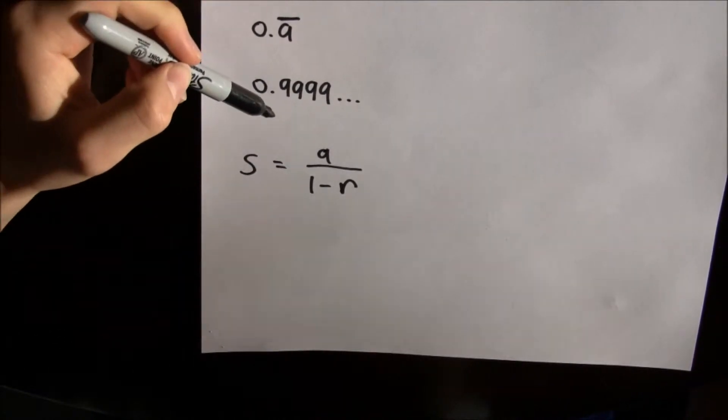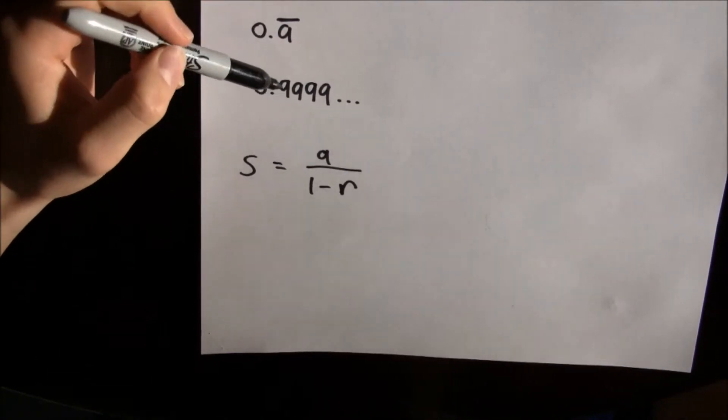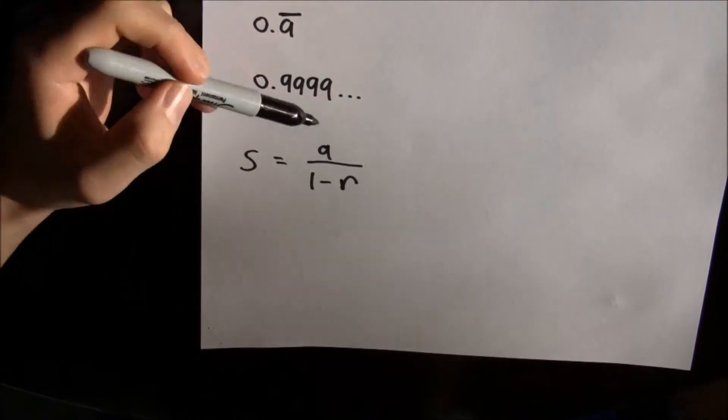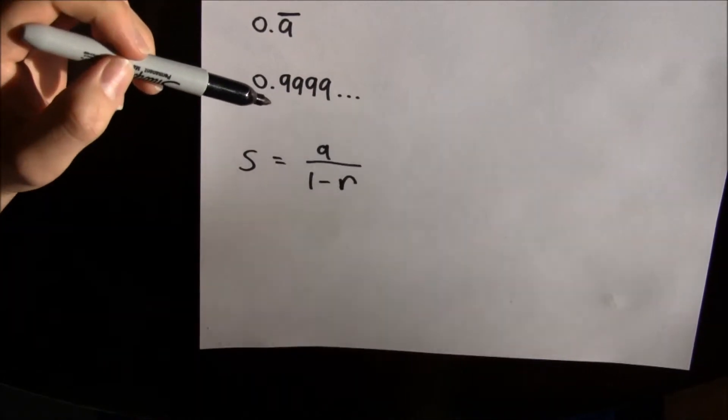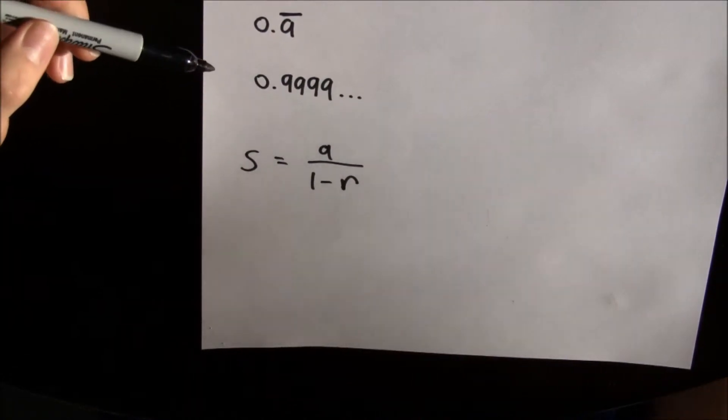So A is our first term in this series, and R is our common ratio—that's what you multiply by the last term to get your new term.